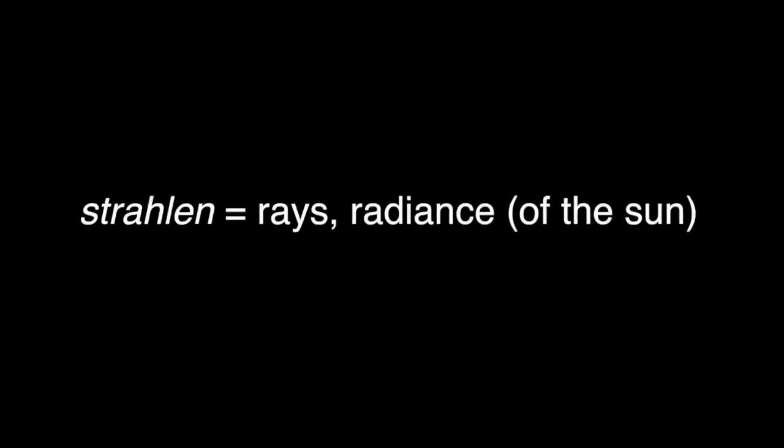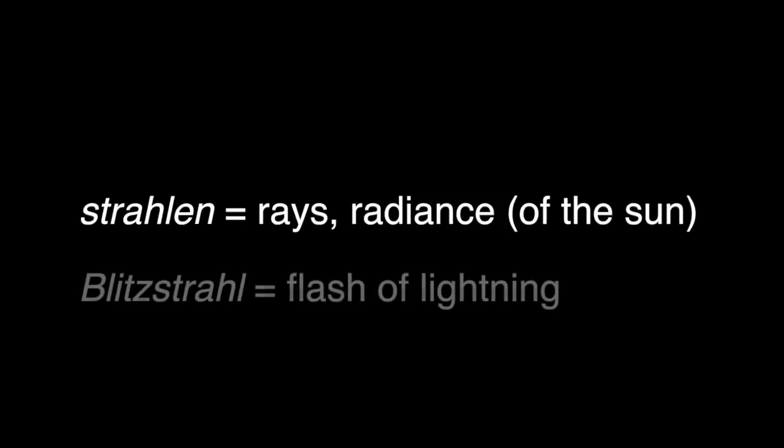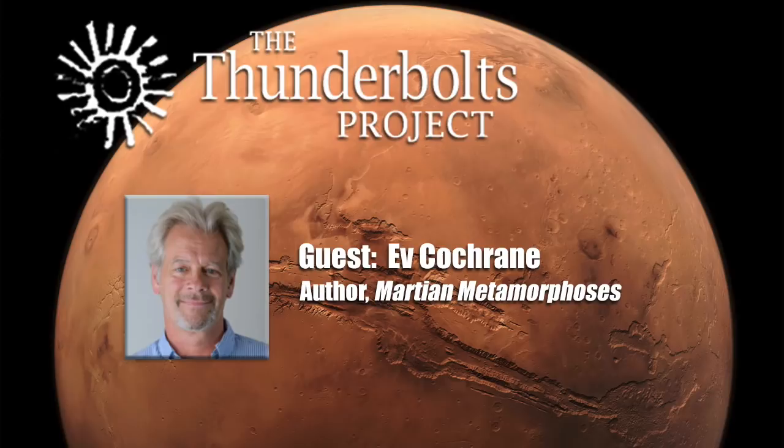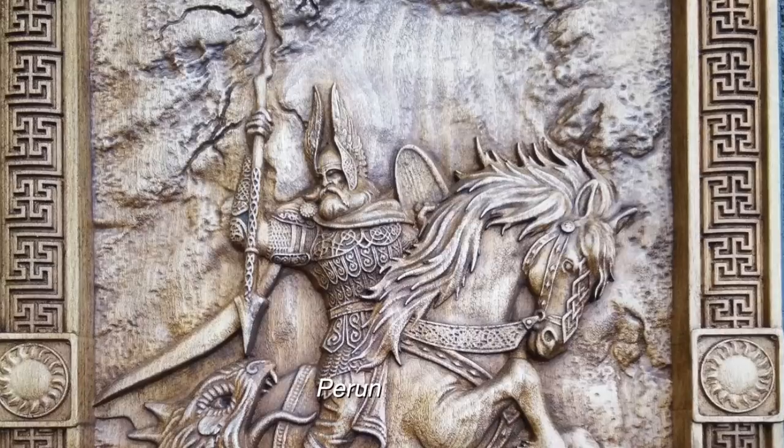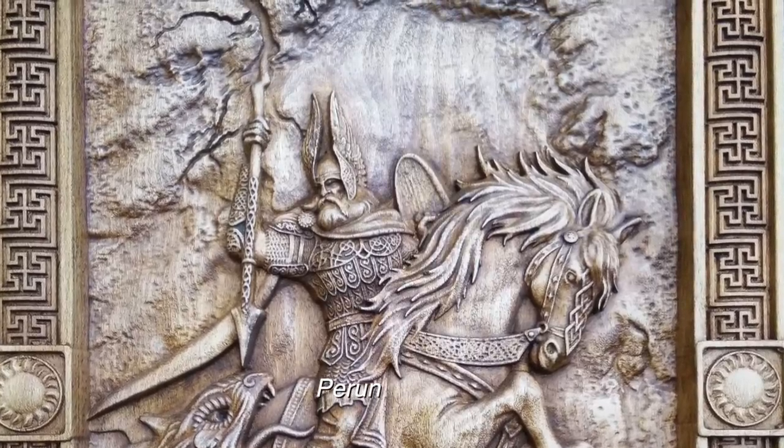The German word strallen, rays or radiance of the Sun, for example, is elsewhere employed to describe a flash of lightning, blitzstrahl. The inherent relation between solar rays and lightning is shown by the fact that the cognate term stralla denotes the lightning-like arrows shot by the Slavic thunder god pruned.